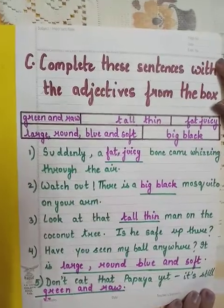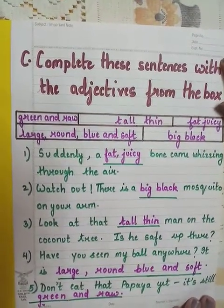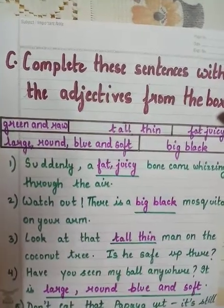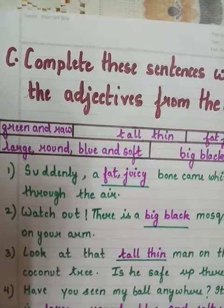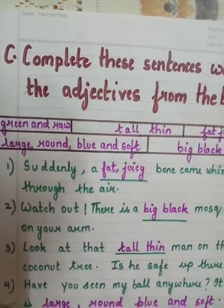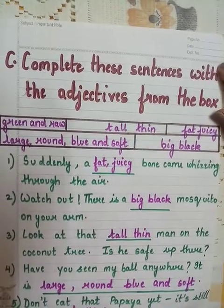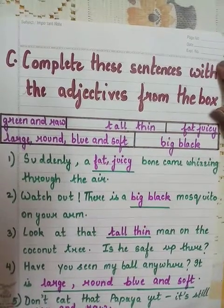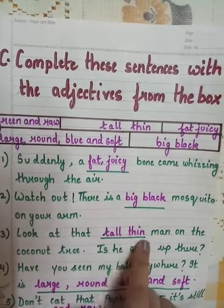Number 3: Look at that tall, thin man on the coconut tree. Is he safe up there? The answers are tall, thin.